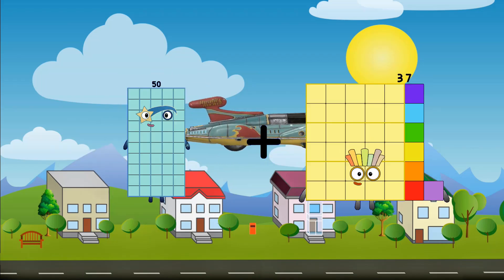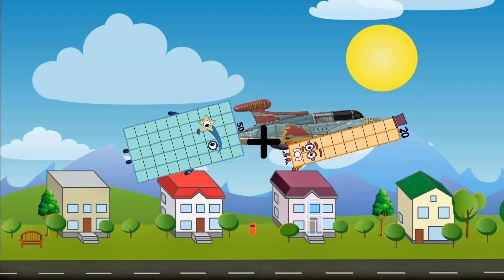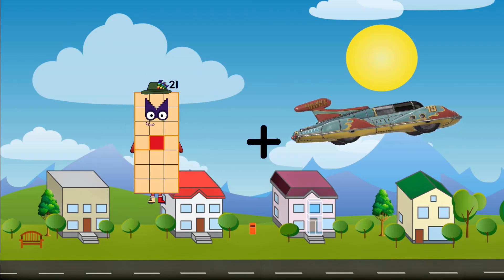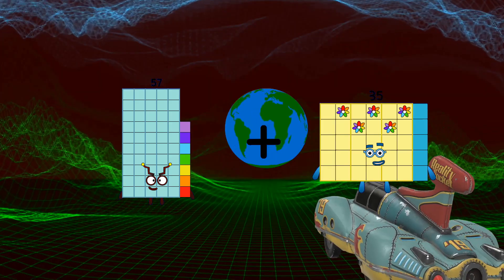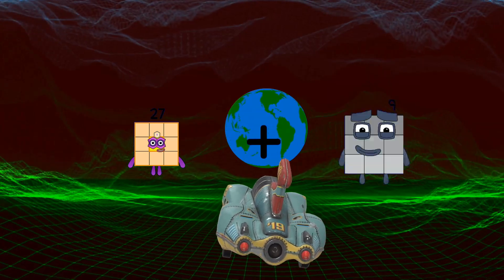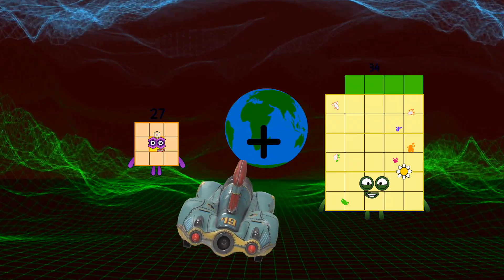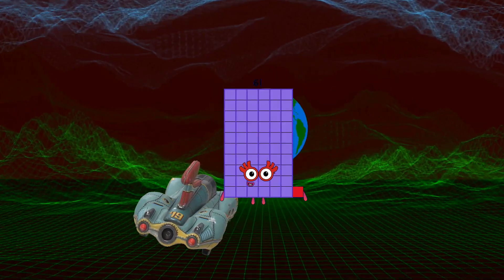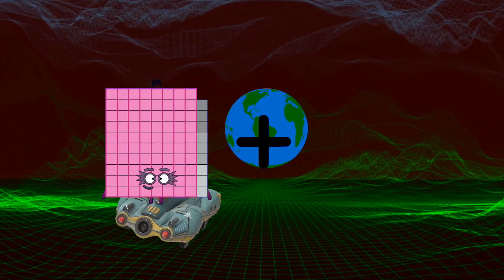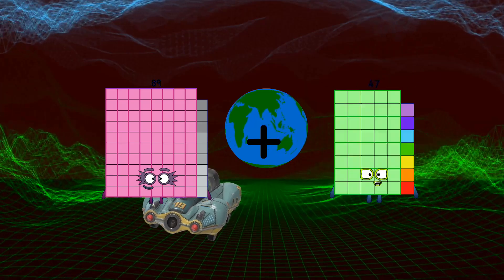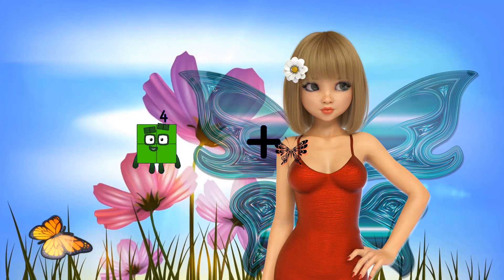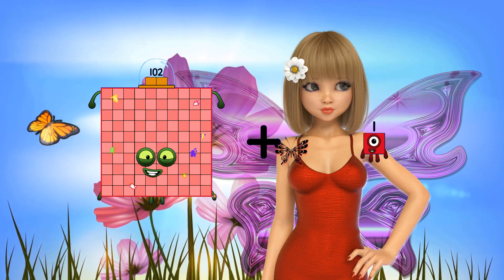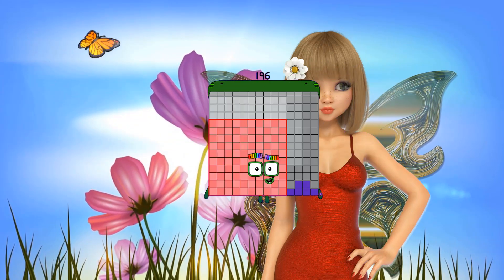50 loss 20 equals 70. 57 loss 35 equals 92. 22 loss 34 equals 61. 89 loss 39 equals 128. 102 loss 94 equals 196.